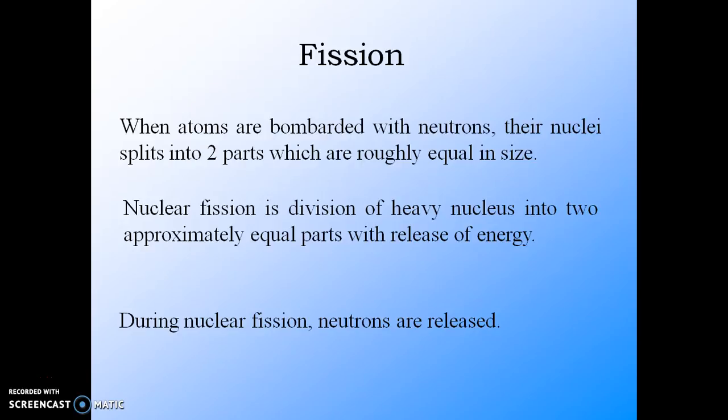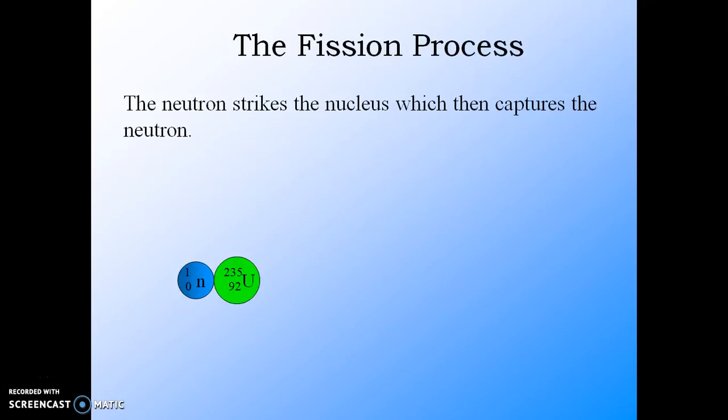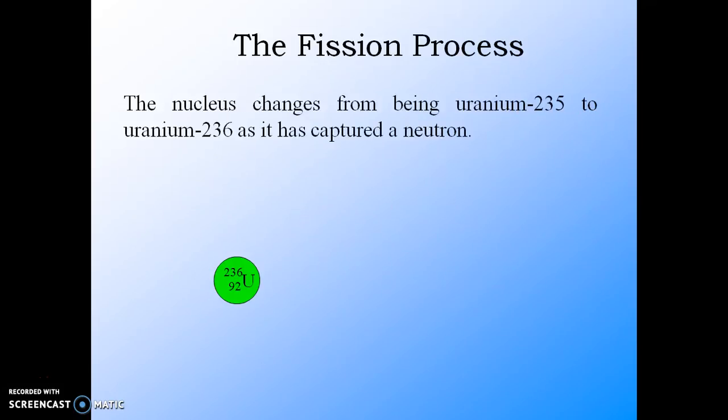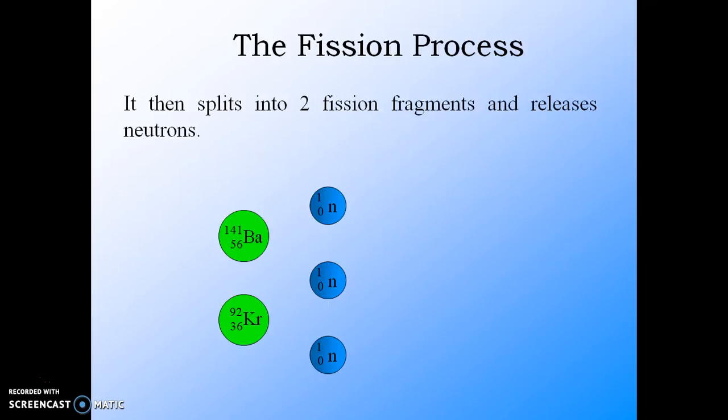During nuclear fission, neutrons are released that give a chain reaction. You see now, a neutron incident on uranium is absorbed, the nucleus becomes excited, and now it undergoes fission into two fragments with release of three neutrons.